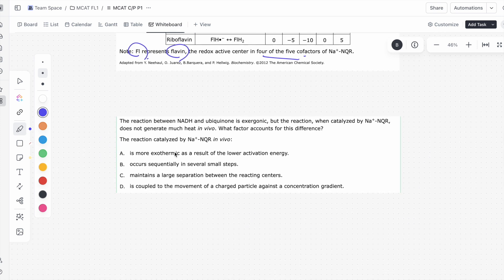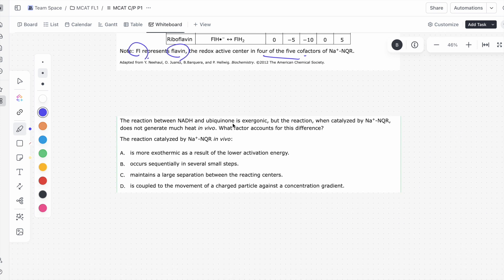This is the last question of this passage, and it says, the reaction between NADH and ubiquinone is exergonic. So it's spontaneous. It's going to be releasing energy. But the reaction when catalyzed by this enzyme does not generate much heat in vivo. So what factor accounts for this difference? The reaction catalyzed by this enzyme in vivo?